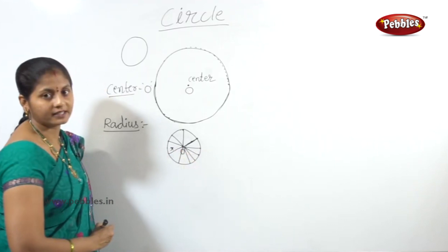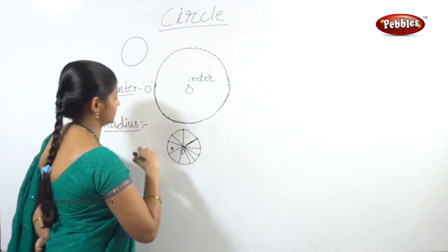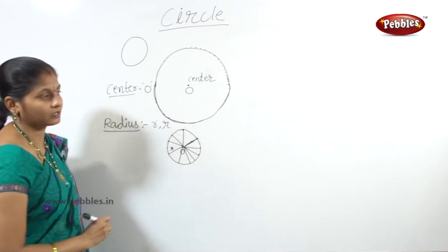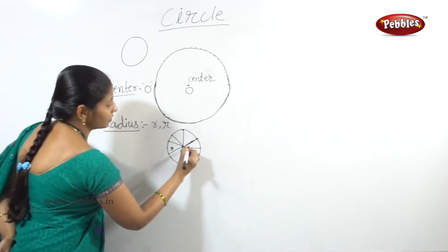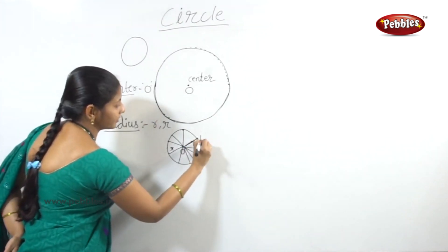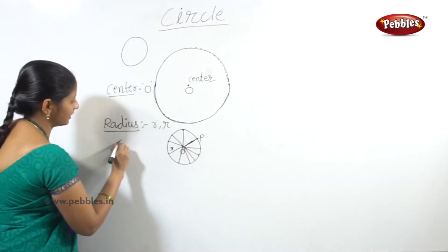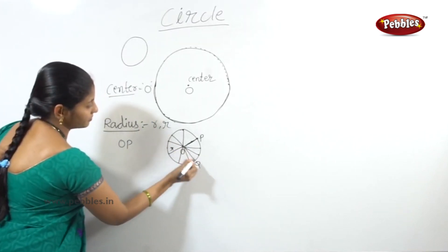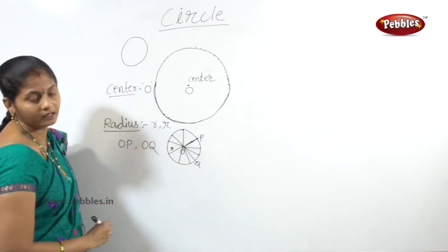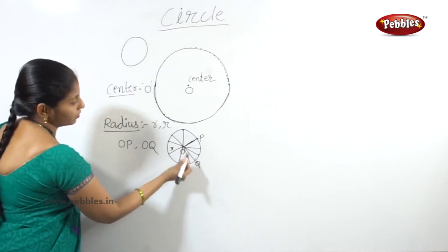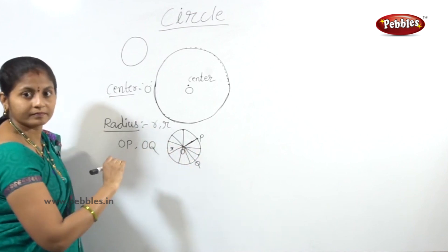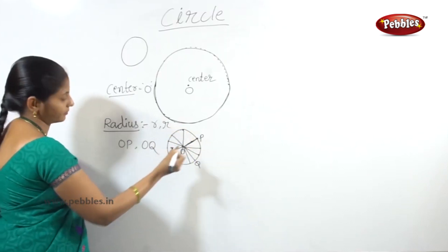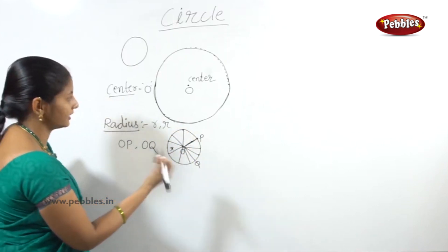We will see the name of the radius. This radius is OP, and this radius is OQ. The center is O and the points P and Q are on the circle. So the radii are named OP and OQ.